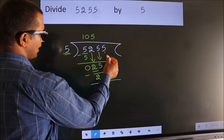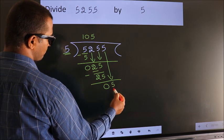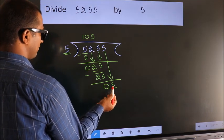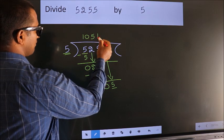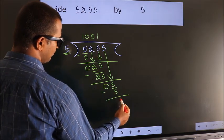After this, bring down the next number. So 5 down. When do we get 5? In the 5 table. 5 once, 5. Now we subtract. We get 0.